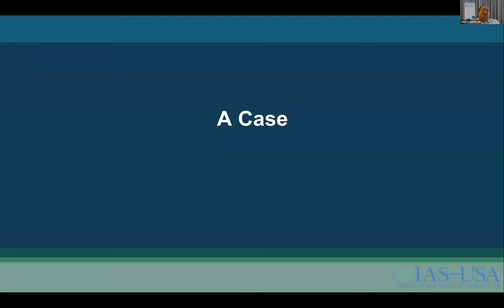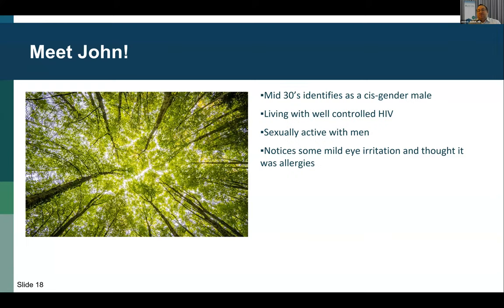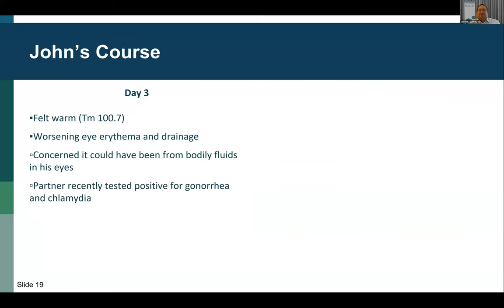I want to tell you about my first case of human monkeypox virus. This patient presented in mid-June, early on when there were few U.S. cases. John is in his mid-30s, identifies as a cisgender male, living with long-term well-controlled HIV. He's sexually active with men and four recent partners, all known for a long time. He first noticed some mild eye irritation he thought was allergies. Three days later, he had a temperature of 100.7, worsening eye redness and drainage from a recent sexual encounter, and a partner had just tested positive for gonorrhea and chlamydia.